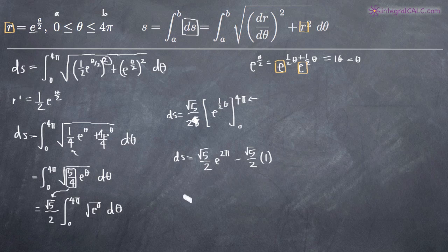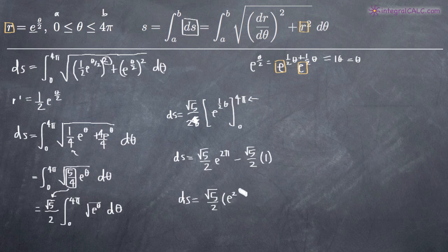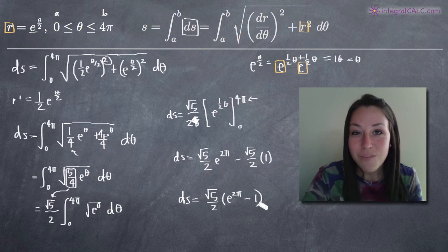So now, to get our final answer for arc length, we factor out square root of 5 over 2 and we simply end up with the square root of 5 over 2 times the quantity e to the 2π minus 1. And that's it — that's our final answer. That answer represents the arc length of the polar parametric curve r equals e to the theta over 2 on the range 0 to 4π. I hope this video helped you guys and I'll see you in the next one.